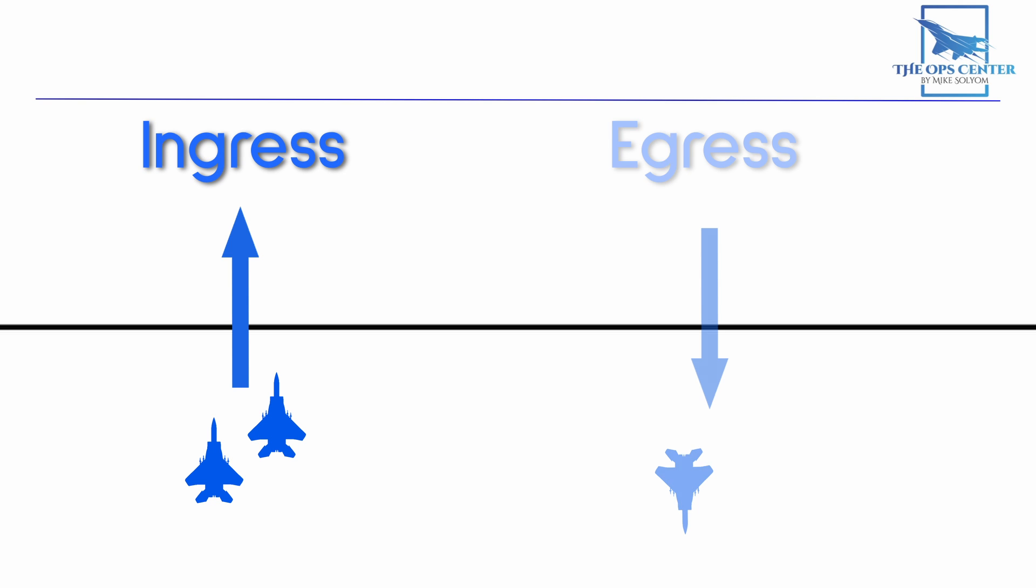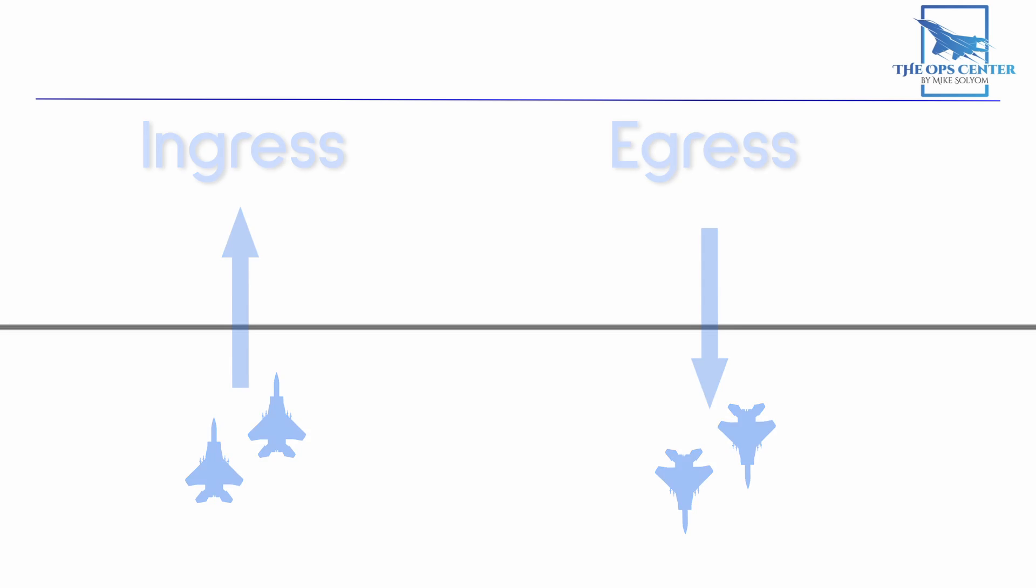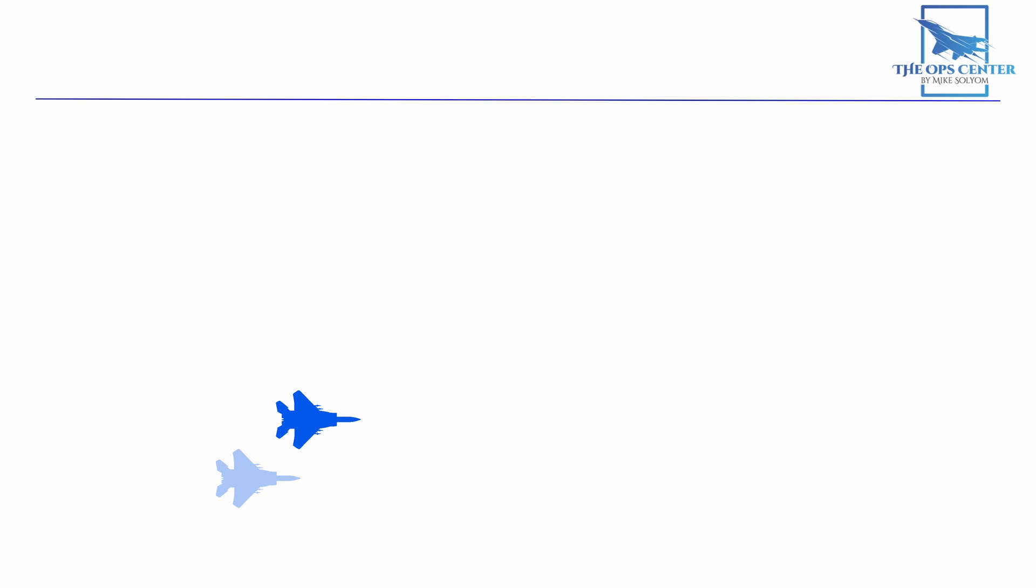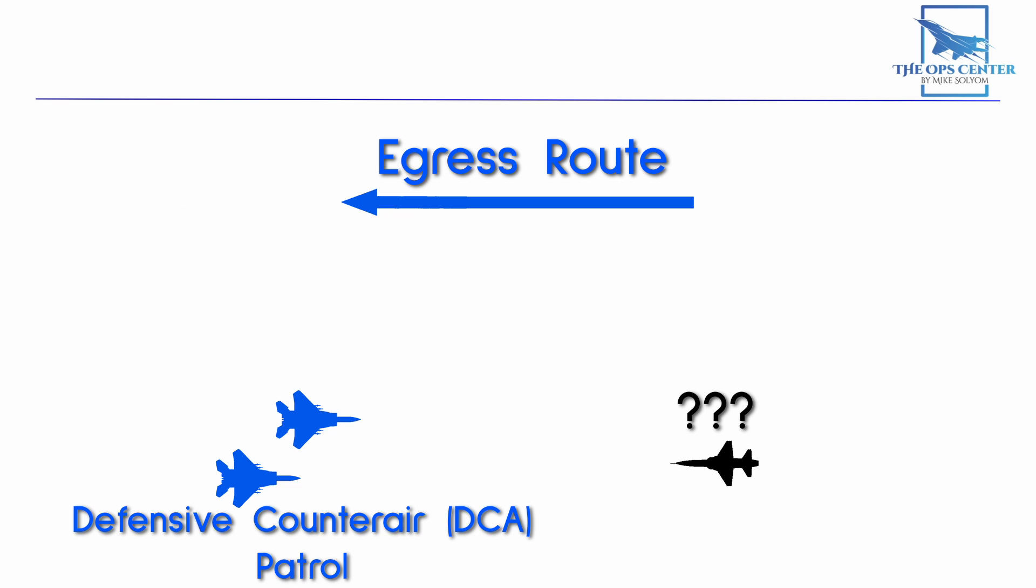Separate ingress and egress routes can also be put in place. These special procedures will be outlined in an airspace control order, or ACO. This is a document that accompanies each day's air-tasking order. As long as friendly aircraft stick to these routes, it makes it very clear to DCA fighter patrols if someone is friendly. When an unknown aircraft approaches from outside of these procedural areas, then they automatically know to keep an eye on it.